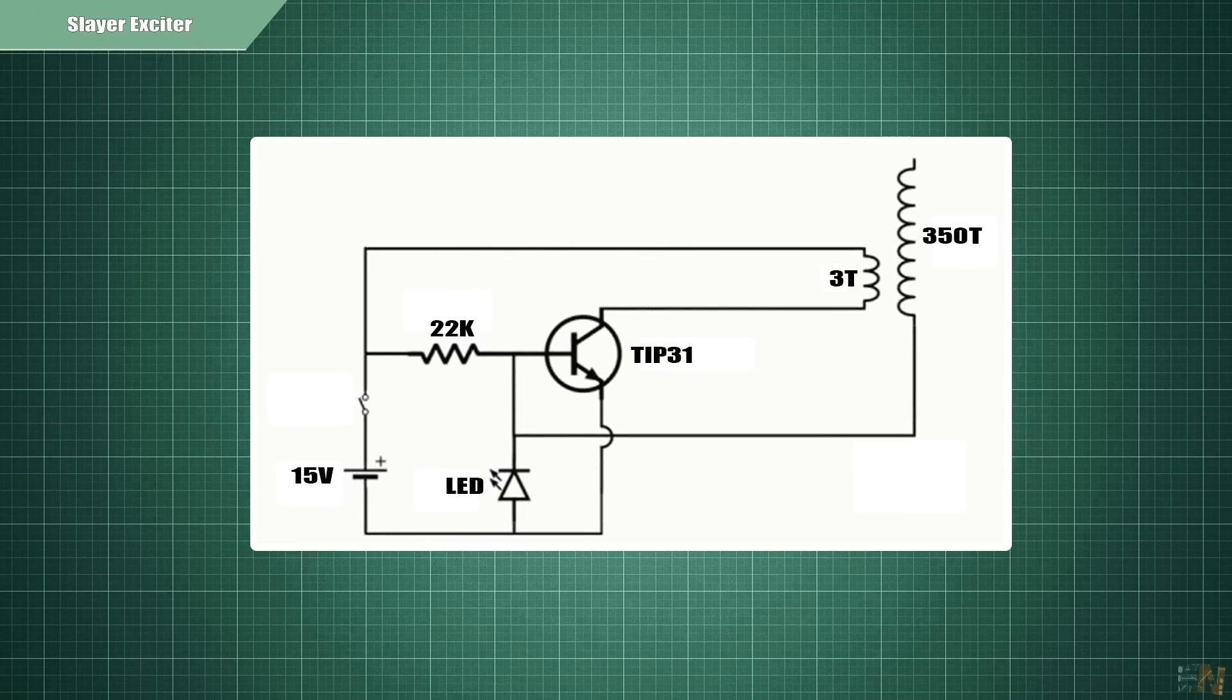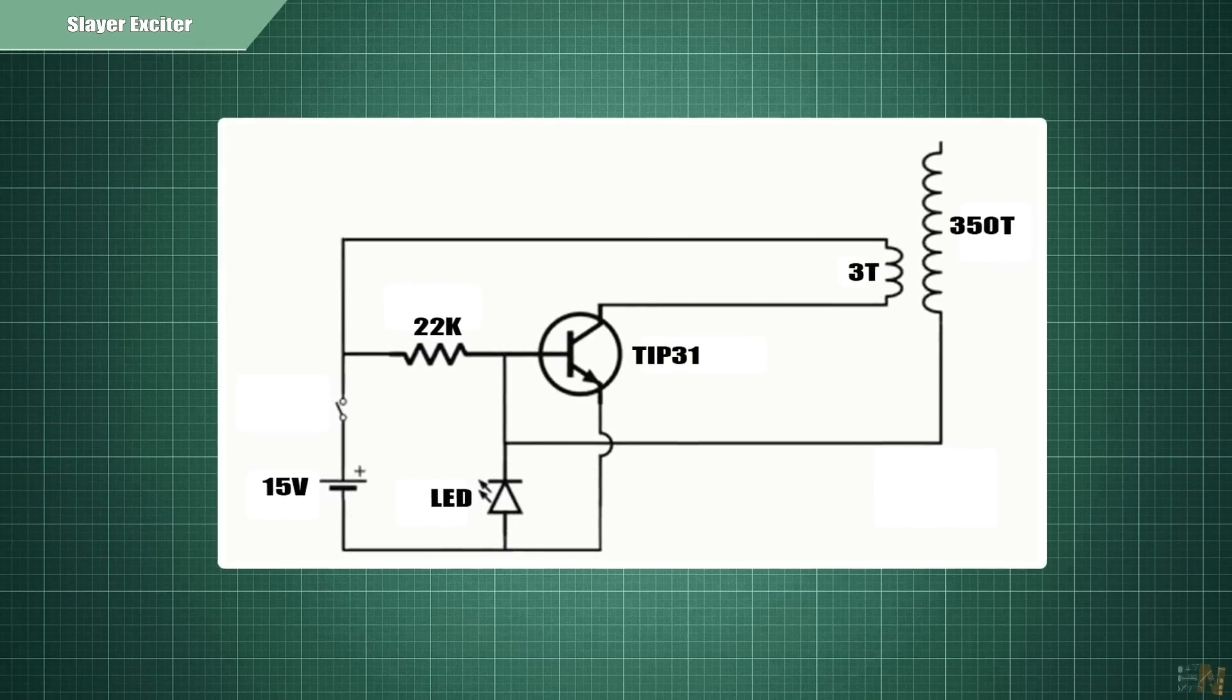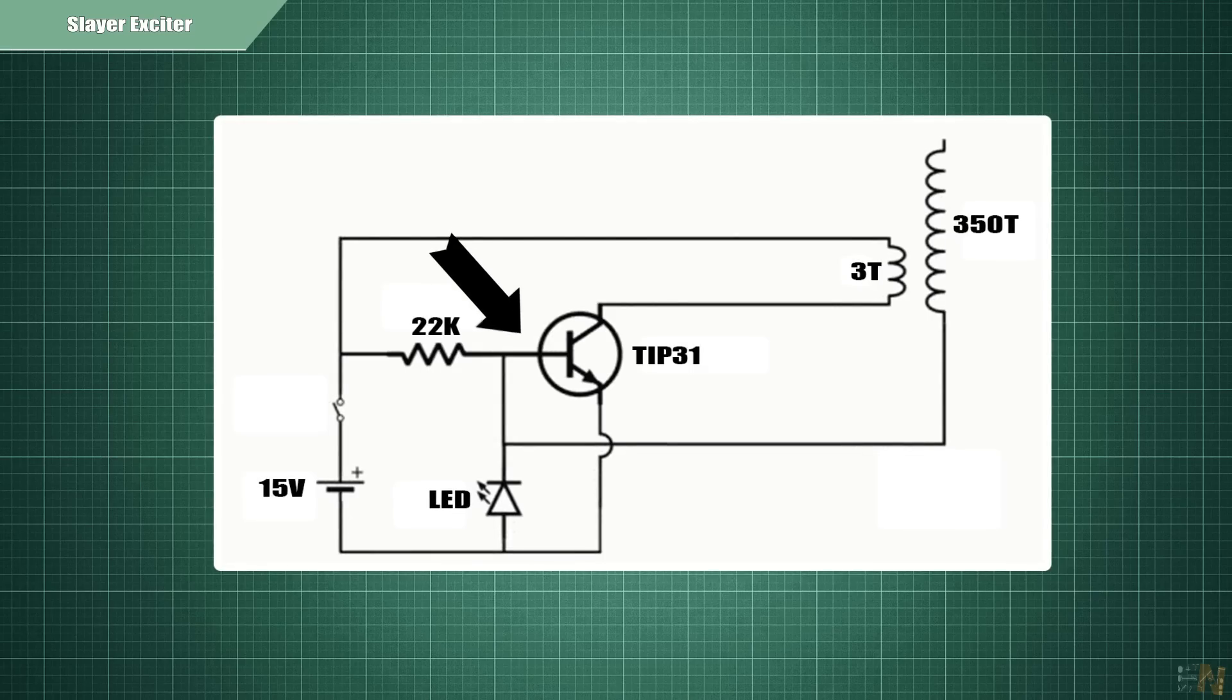Ok, so this is the Slayer exciter circuit. This is more than simple and works with low DC voltage. When voltage is applied to the base of the BJT transistor, the transistor is now turned on.